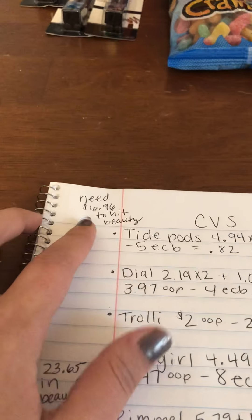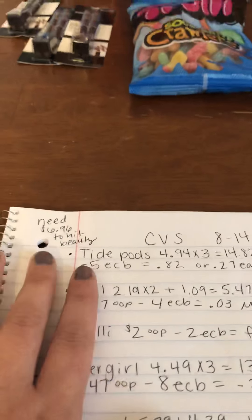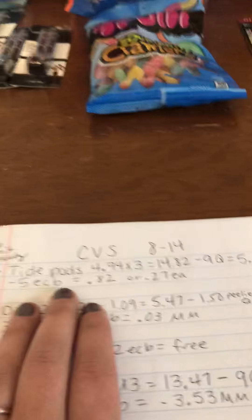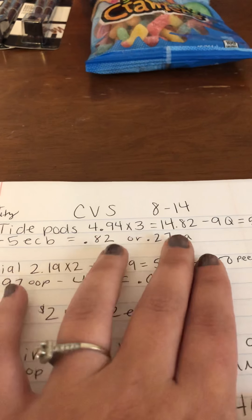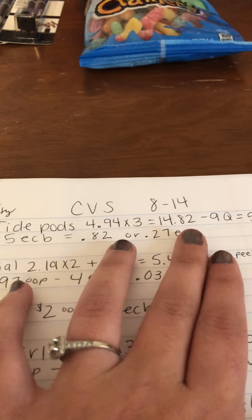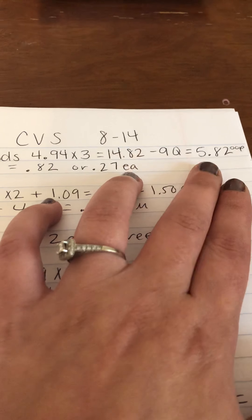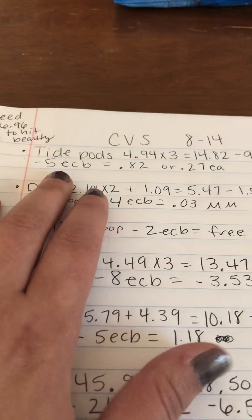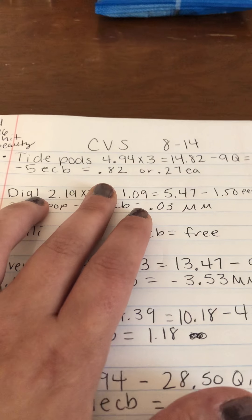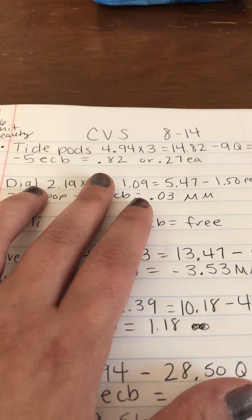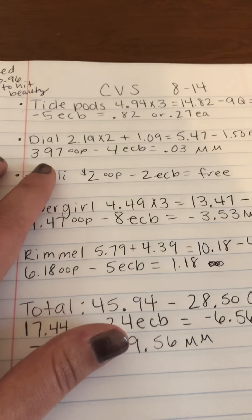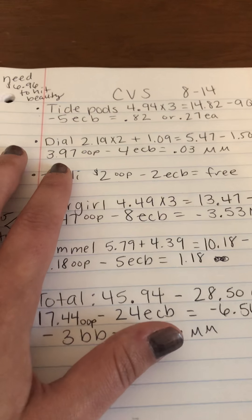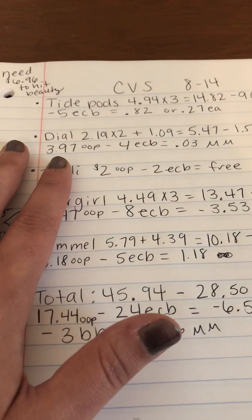I needed $6.96 to hit beauty. So this is the breakdown for the Tide Pods. Three of them is $4.94, so that totals $14.82, and then I used all together $9 in coupons. So I paid $5.82 out of pocket but got back a $5 ECB, making them just $0.82 or $0.27 each. And that's a great deal. That's probably my favorite deal this week. There's a lot of good deals this week though, especially with a purchase based coupon, like a $5 off $40.